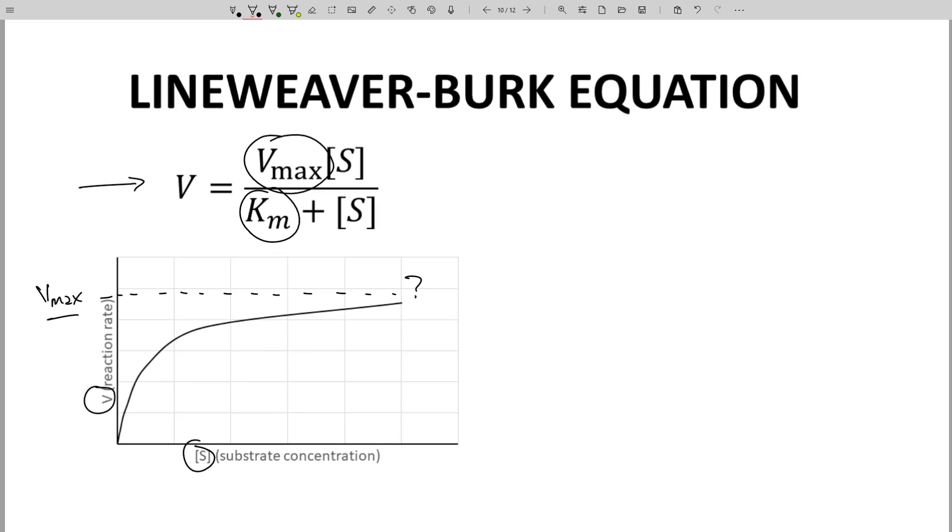Km is the substrate concentration that gives a rate of ½ Vmax. Km is right about here somewhere. Again, it's hard to determine. Is there an easier way to determine accurately Km and Vmax?